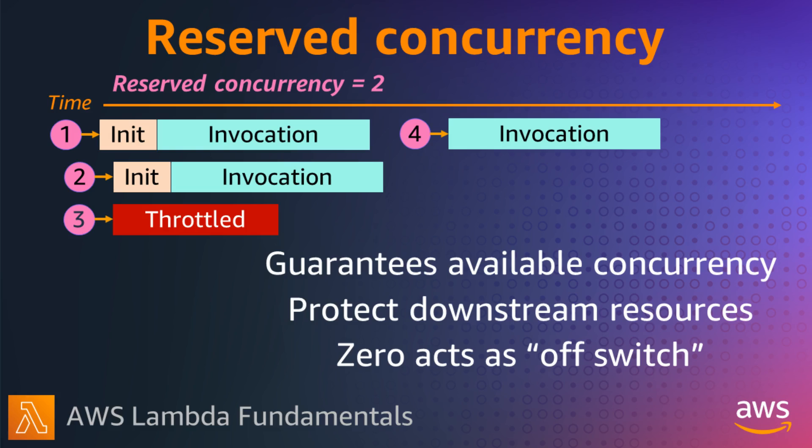If a database or external API can only handle 50 concurrent connections, you can ensure Lambda can't scale beyond 50 concurrent invokes and overwhelm the downstream service.